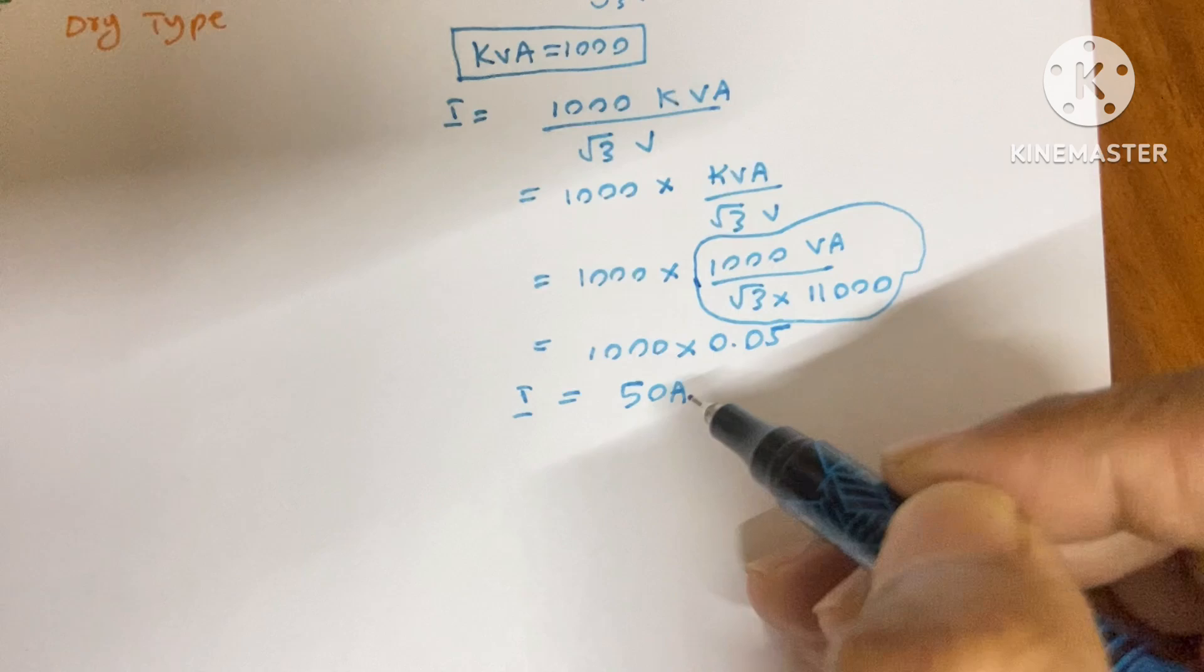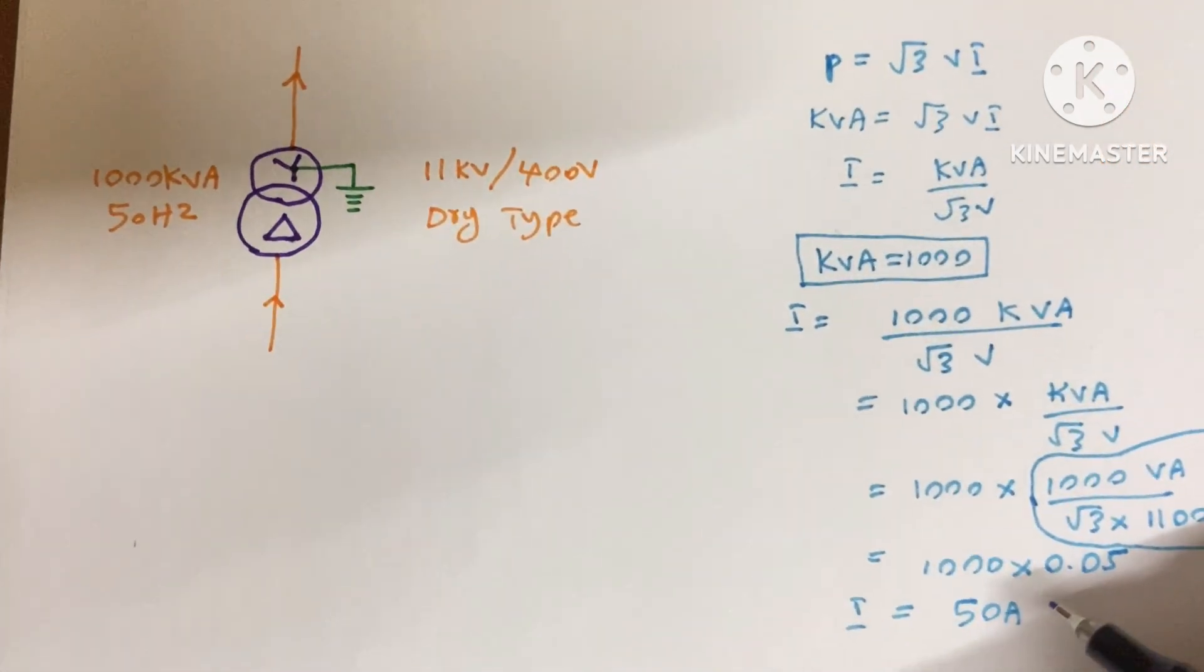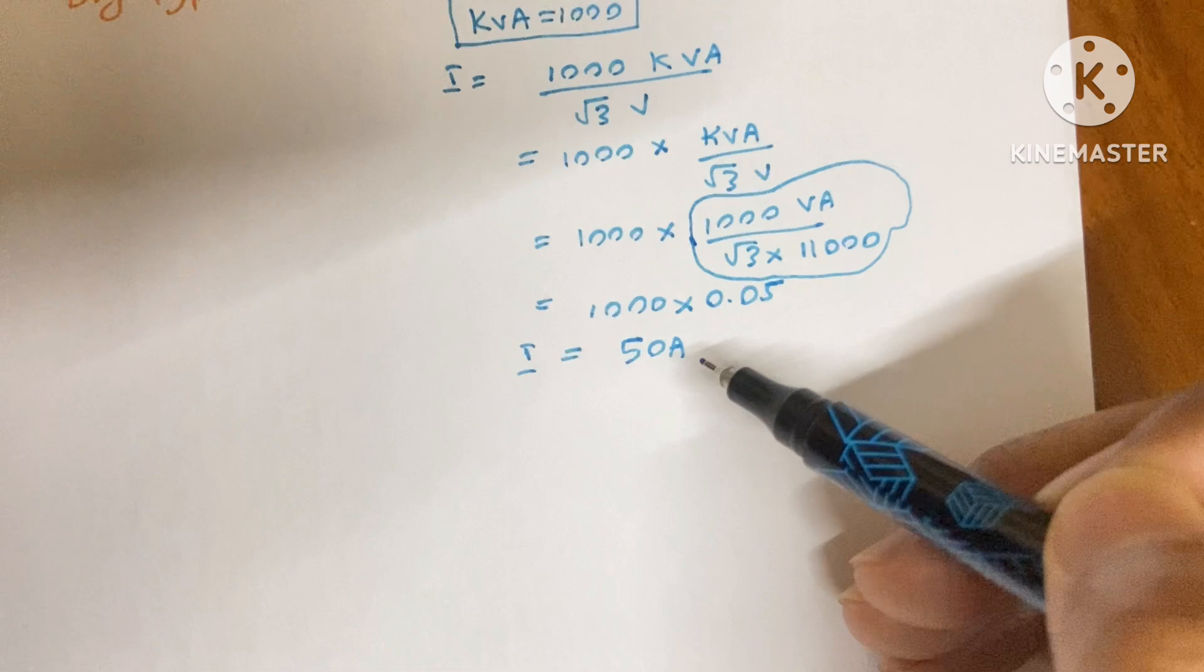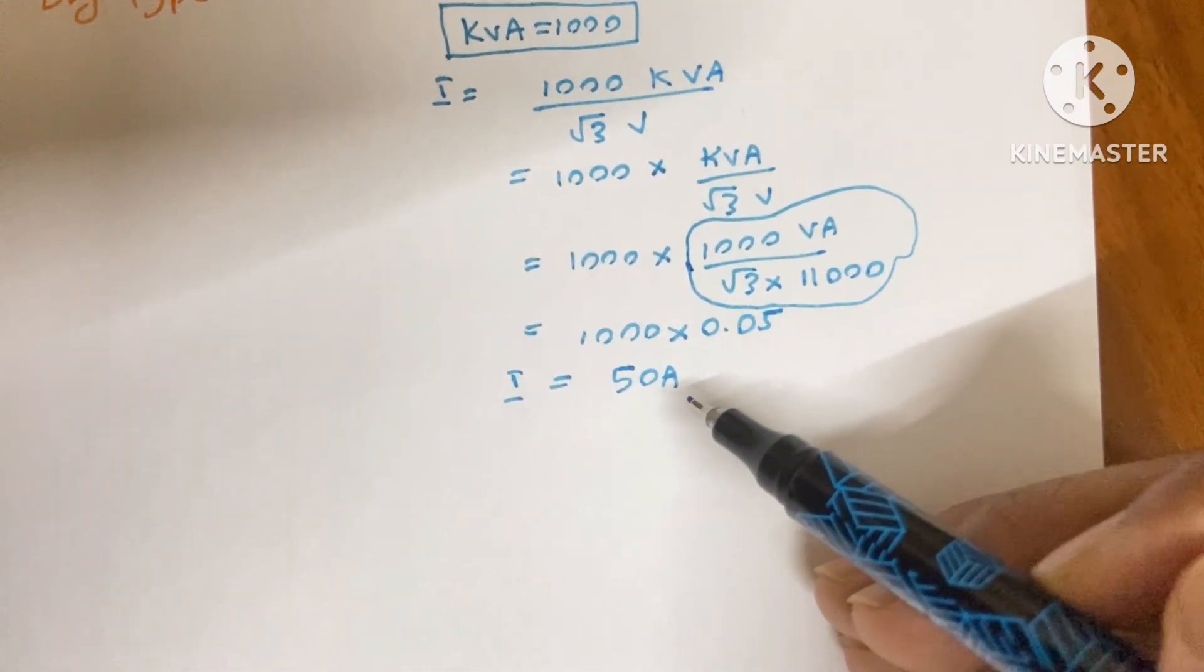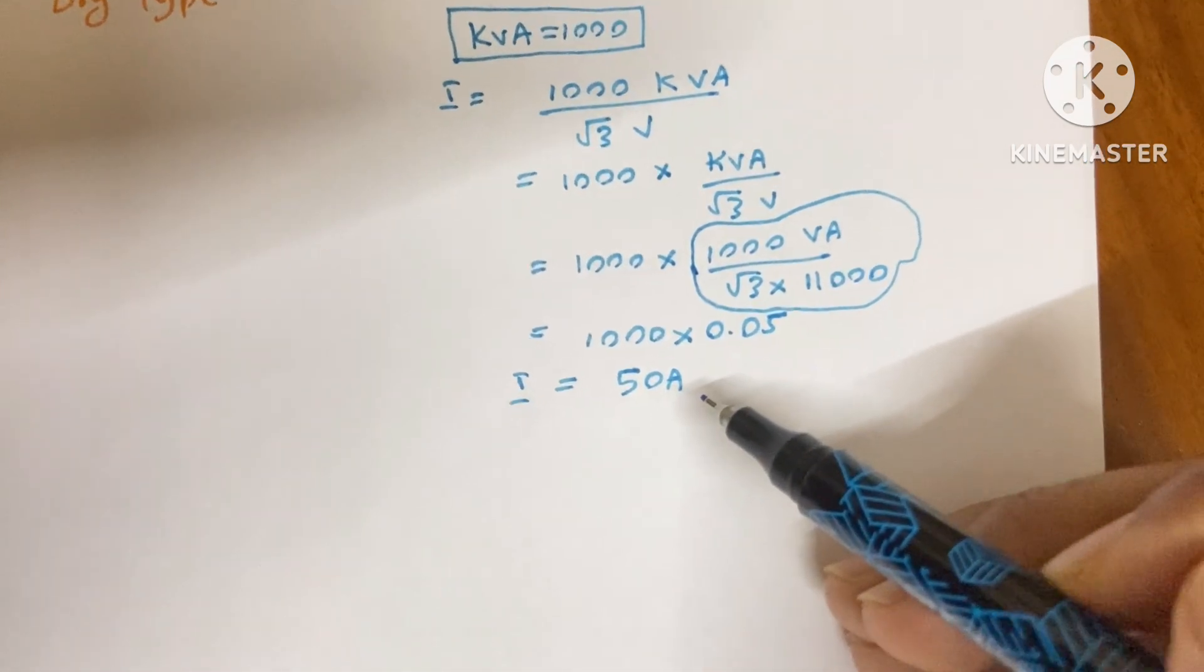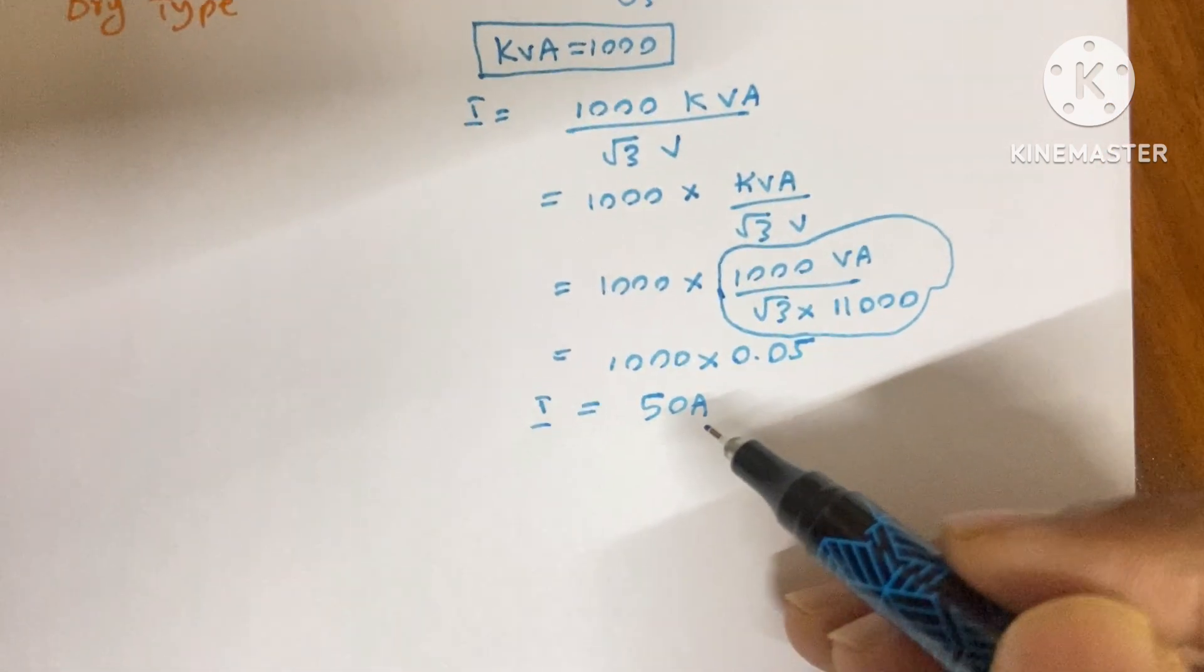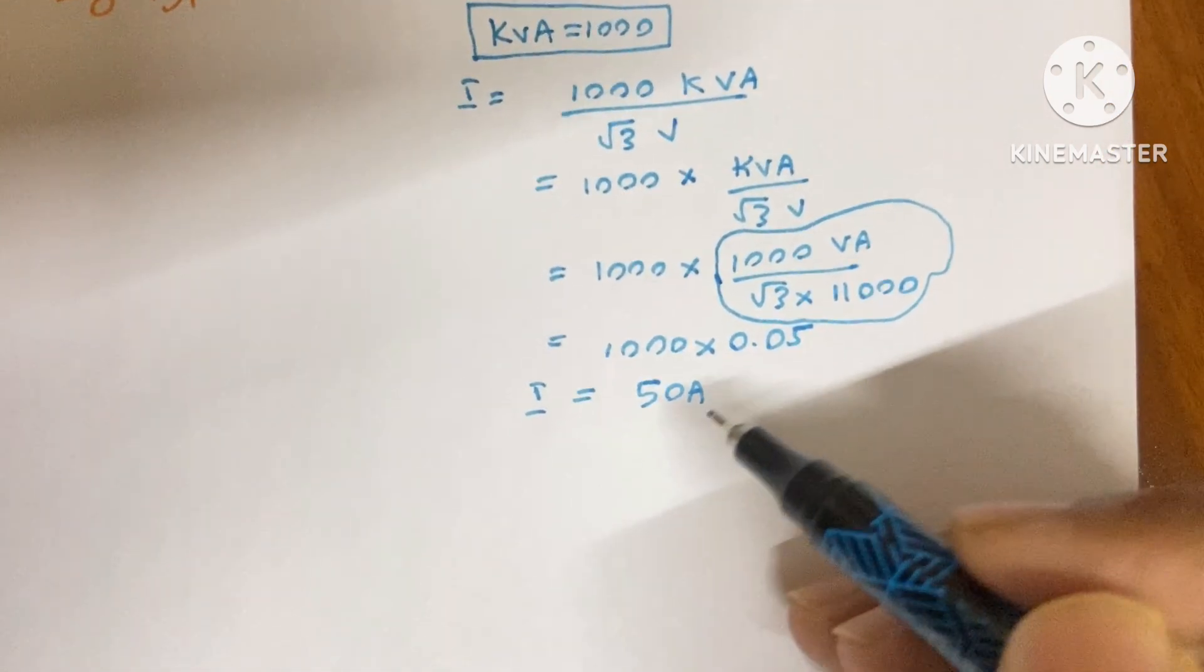It means the primary side current of our transformer is 50 A. Here our current is very small. The reason is the voltage is high, because the voltage and current is inversely proportional.